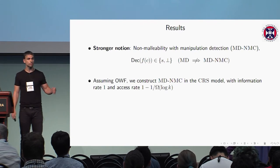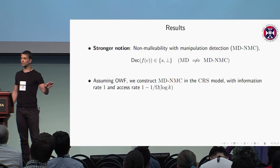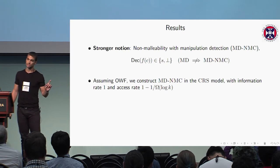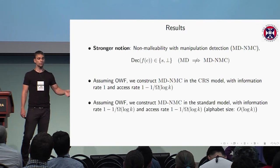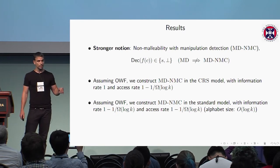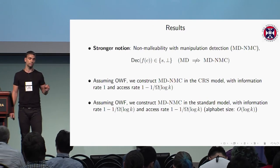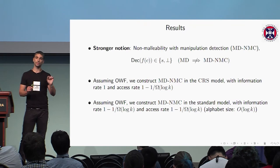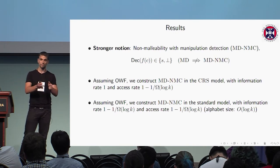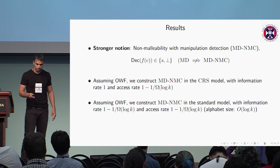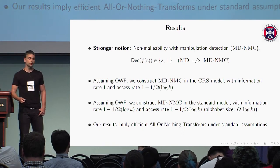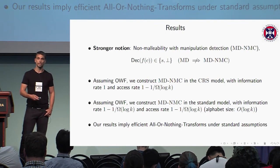Assuming one-way functions, we construct non-malleable codes with manipulation detection in the CRS model, with information rate 1 minus omega(log k) / k, where k is the security parameter — we are in the computational setting. Then we show how to remove the CRS and have a construction in the standard model with information rate and access rate 1 minus omega(log k), increasing the alphabet size so that symbols are bit strings of length log k. Our results also yield efficient all-or-nothing transforms under standard assumptions, which to our knowledge is the first construction achieving this kind of rate under standard assumptions.